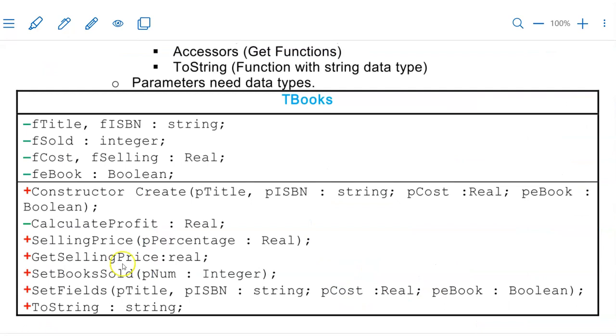This is what the UML looks like. We have the name of the class at the top and our private fields listed at the top.